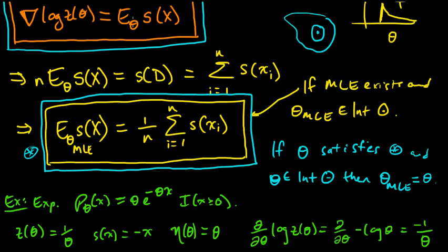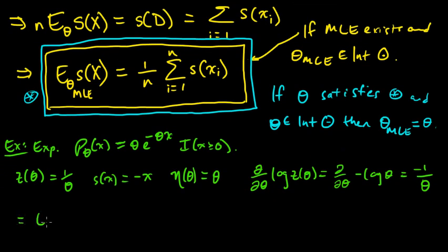And that we know from this is equal to the expected value under theta of s of x. So what's the expected value of s of x? S is just this thing, so that expected value is minus the expected value of x. And so this implies that, we cancel the minus signs, the expectation of x, one over theta, the expectation of an exponentially distributed random variable is one over theta. And let me check to make sure. I think that's right, let me check my usual reference here in the back of Grimit and Sturzacher, the nice lookup table they have there. And indeed, yes, the mean of an exponential is one over theta.